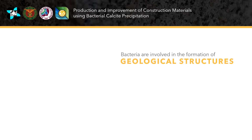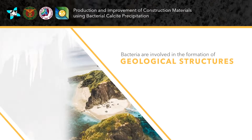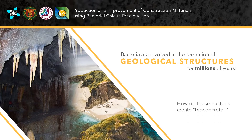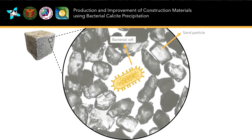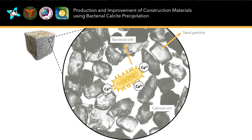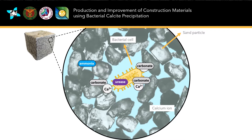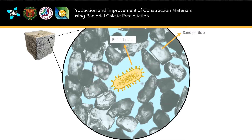Some scientists believe that bacteria have been involved in the formation of geological structures like limestone formations and caves for millions of years. First, the negatively charged bacterial cell walls attract positively charged ions such as calcium from their surroundings. Next, the bacteria secrete an enzyme called urease to break down urea in the environment to obtain energy. The breakdown of urea makes the environment alkaline while producing carbonates, and this alkaline environment will favor the precipitation of calcium carbonate.